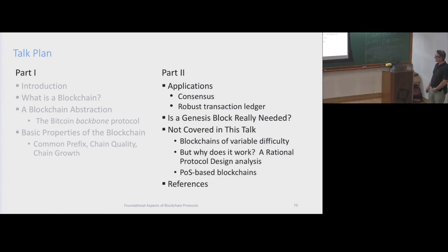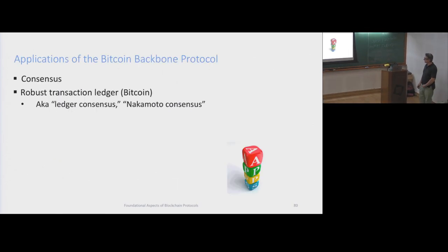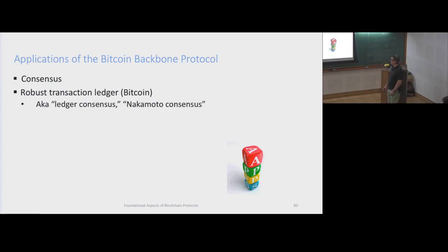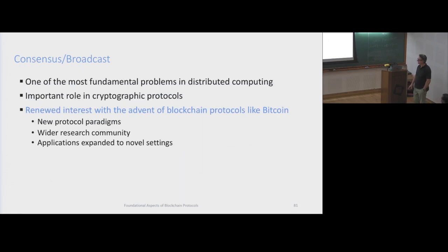Part two, we're going to start talking about applications, and we're going to look at consensus, which is a classical distributed computing problem, and what we call robot transaction ledger, which is also called ledger consensus or Nakamoto consensus.